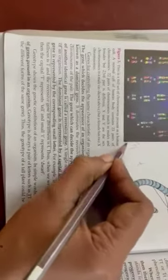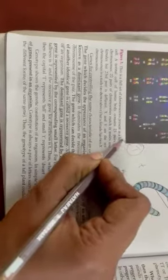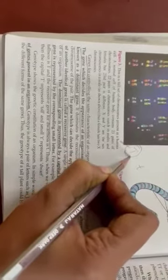Like here see capital D and small t. Capital D is dominant and dominant will always express itself, represented in the capital letter. And recessive is always written in the form of small letter.